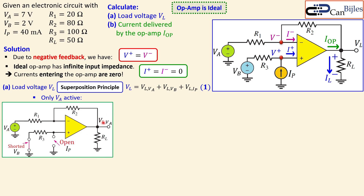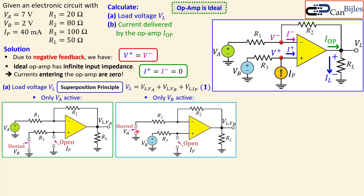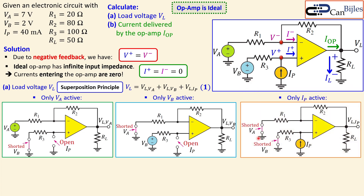With only Va active, we get the first contribution to VL. Next, activating Vb only: Va is shorted and Ip is open, giving the second contribution. Finally, activating Ip only: both voltage sources Va and Vb are shorted, giving the third contribution. We now calculate the load voltage for each of these three cases.